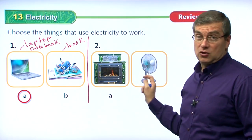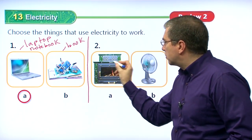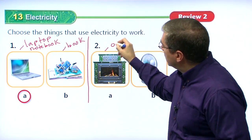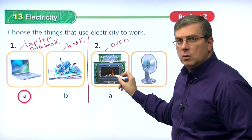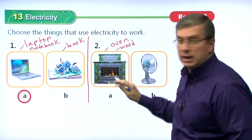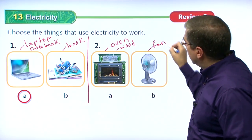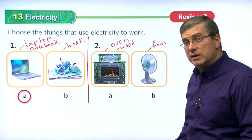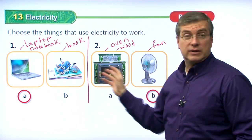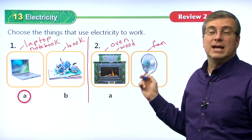Number two: which one uses electricity? This is a fireplace — it could be an oven or stove. But what are they using as fuel? They're using charcoal or maybe wood — they're not using electricity. What's this one? You use it in the summer — it's a fan. To turn on the fan, you have to plug it into the outlet. So we use the fan for electricity. We use electricity for various things in our house, but not everything.